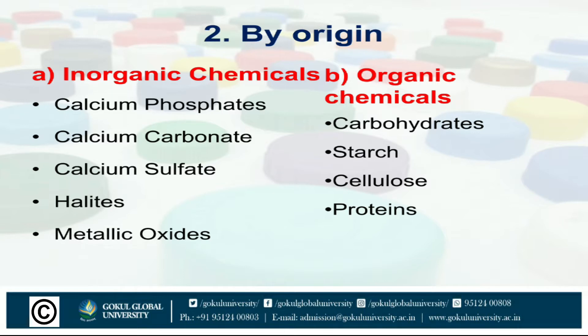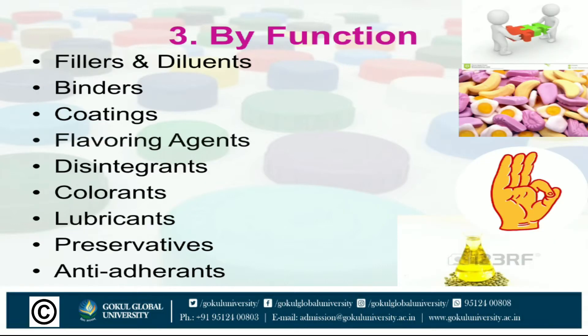Based on origin, excipients are classified into inorganic chemicals or organic chemicals. Under inorganic chemicals we have calcium phosphates, calcium carbonate, calcium sulfate, halides and metallic oxide. And under organic chemicals we have carbohydrates, starch, cellulose and proteins.